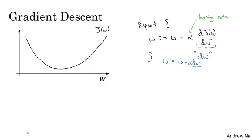Now let's just make sure that this gradient descent update makes sense. Let's say that w was over here, so you're at this point on the cost function J of w. Remember that the definition of a derivative is the slope of a function at the point. So the slope of a function is really the height divided by the width of a little triangle here at this tangent to J of w at that point. And so here, the derivative is positive. w gets updated as w minus a learning rate times the derivative. The derivative is positive, and so you end up subtracting from w, so you end up taking a step to the left.